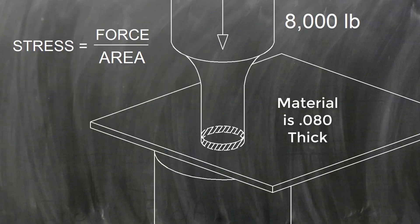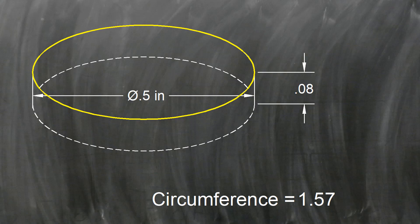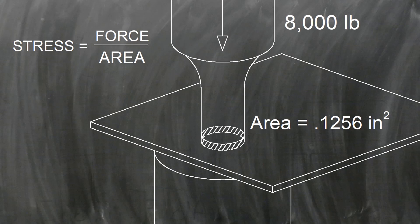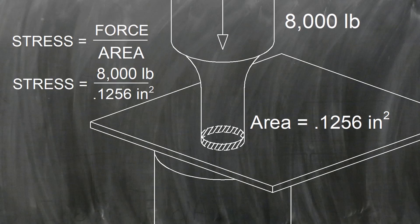To find the area, we take the distance around the punch and multiply by the thickness of the material. So here, there's 8,000 pounds of force being applied, and the area is 0.1256 square inches. The shear stress developed in the metal being punched is a little more than 63,600 psi.